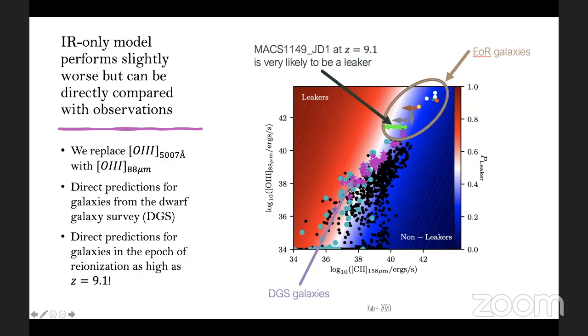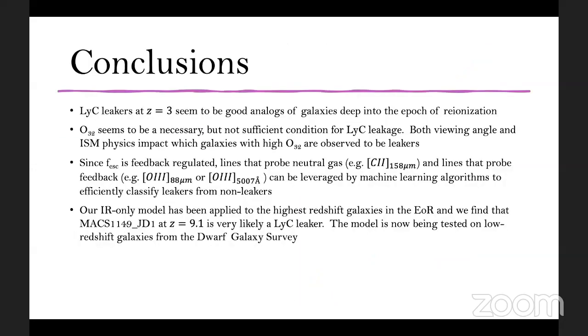Unfortunately, we don't have measurements of the Lyman continuum escape fraction from all of these galaxies, but hopefully follow-up observations can confirm or refute my model. However, as you heard earlier this week, one of the most interesting things we can do is that we actually have a number of galaxies directly in the epoch of reionization that have oxygen-3 and carbon-2 emission lines. So we can make predictions for whether or not those are leakers. And what we find is that this MAX 1149 JD1 galaxy at Redshift 9.1 is our most promising observed known galaxy to actually be leaking Lyman continuum radiation. So thanks so much for giving me this opportunity and I'll leave up my conclusions.